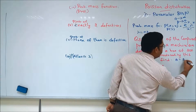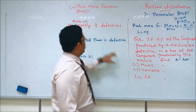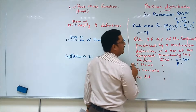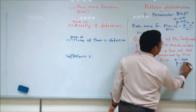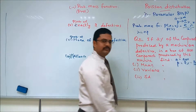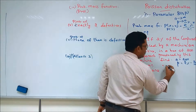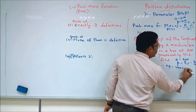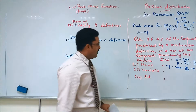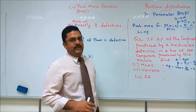Since it is a box of 200, we consider the number of items n = 200. We are discussing defectives, so we take the probability of success as defective, which is given as 2%, that is 2 divided by 100. The mean formula is n times p, so it is 200 into 2 divided by 100, which gives mean = 4.